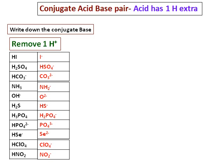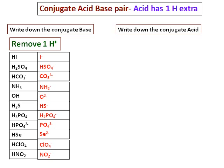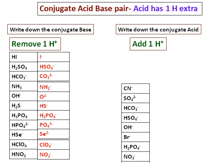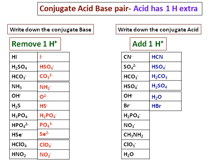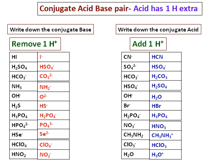They can also ask you to write down the conjugate acid. Since the acid has one hydrogen extra, in this case add one H positive. If the question gives cyanide CN minus, add one H positive and the answer is HCN. SO4 2 minus becomes HSO4 minus — remember you can add only one hydrogen, so the conjugate acid for SO4 2 minus is not H2SO4, it is HSO4 minus. HSO4 minus's conjugate acid is H2SO4. OH minus's conjugate acid is water, and water's conjugate acid is H3O plus. The acid and base pair always differ by one hydrogen, and the acid always has the extra hydrogen.